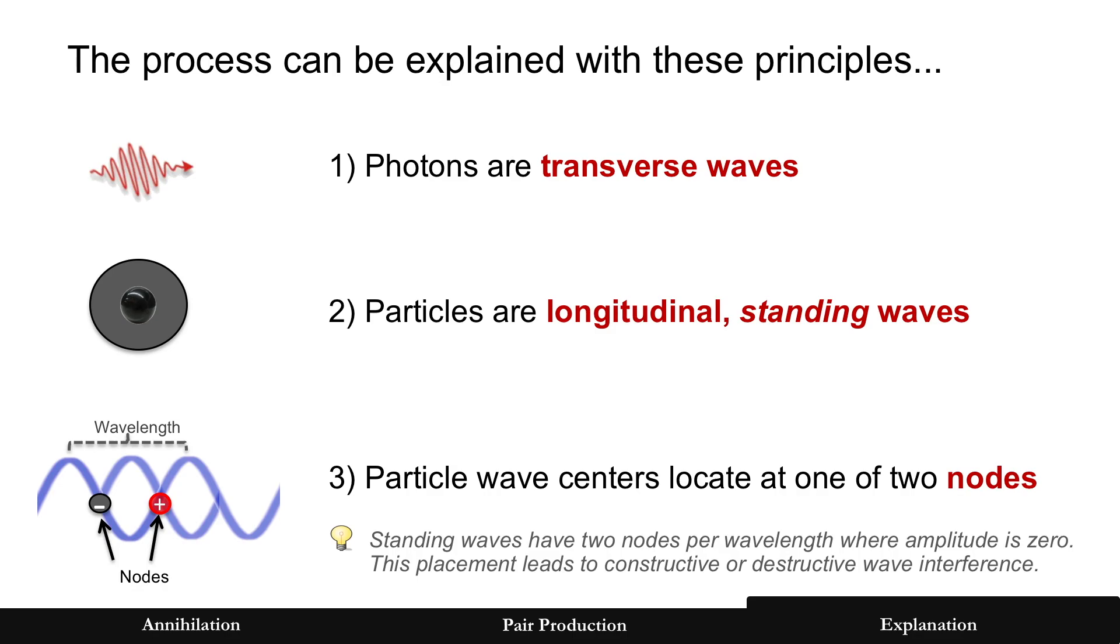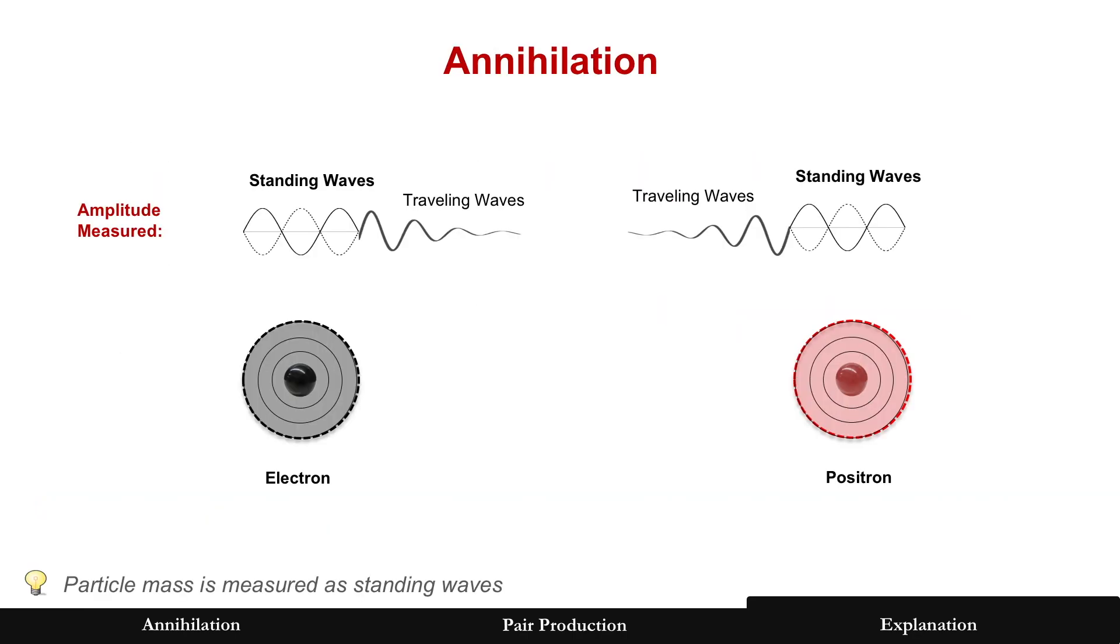All right, so these three principles. Now let's explain annihilation and pair production. First, annihilation. But before we do that, let's just explain again what mass is.